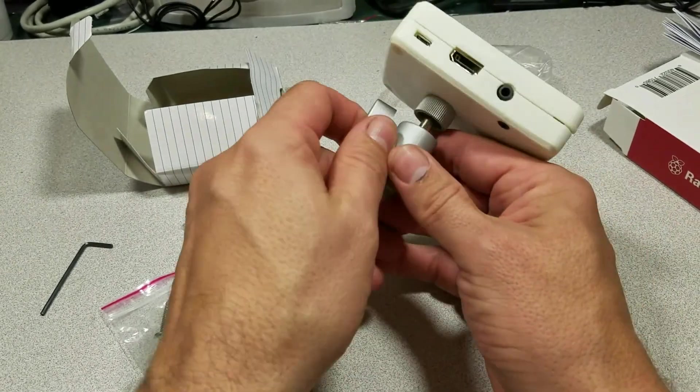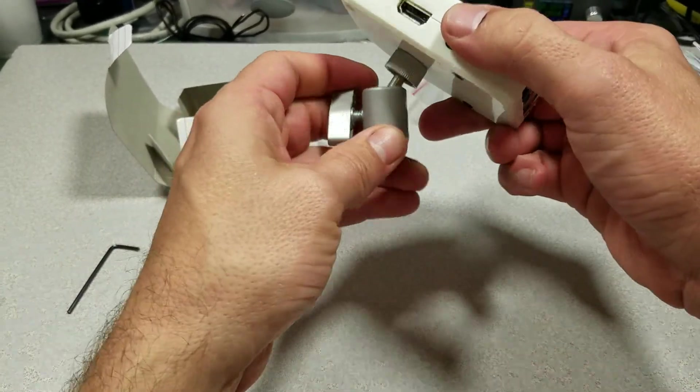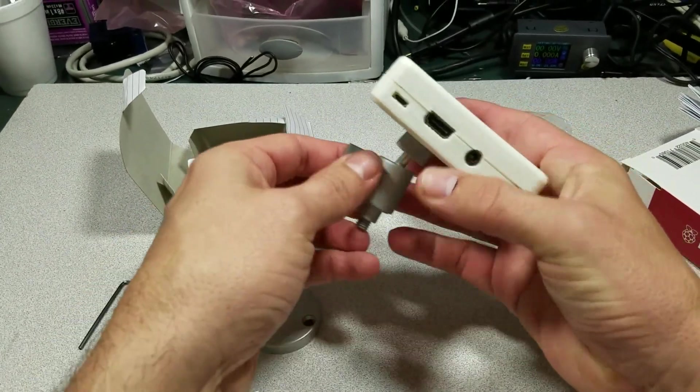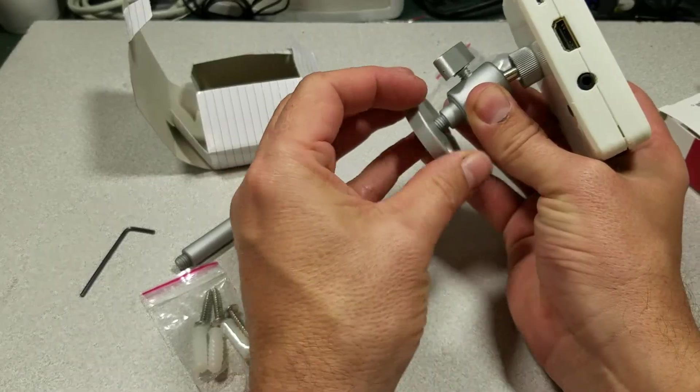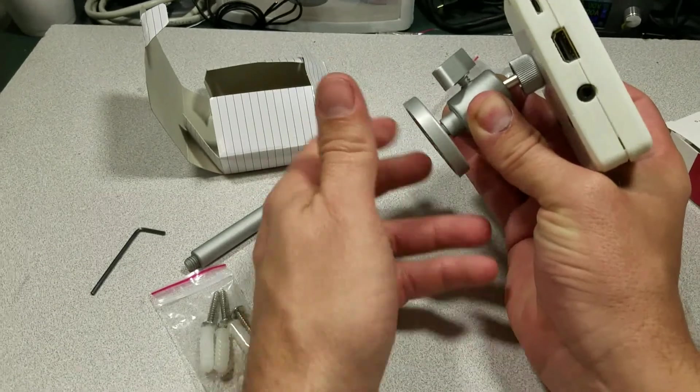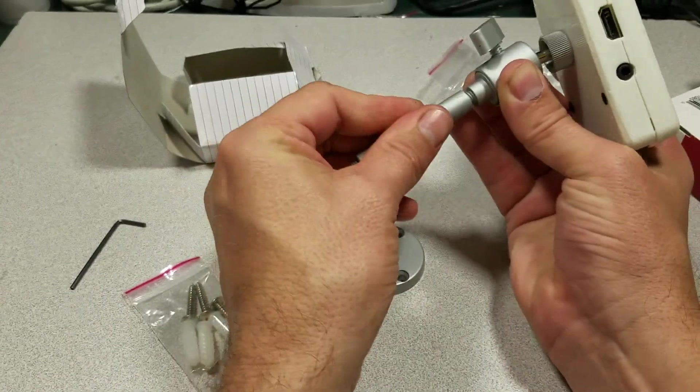Depending on which way you want the camera to tilt, you can adjust that right there. You can tighten it down when you have it the way you want it. If you want something to be close to the wall, or you can use the arm to give it more extension.